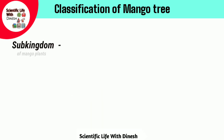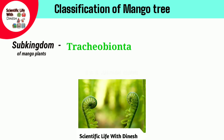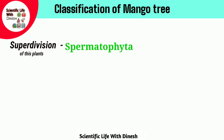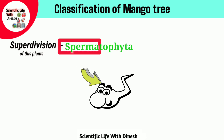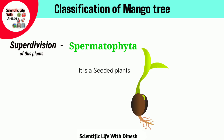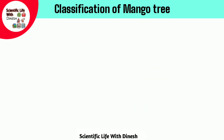Sub-kingdom of this plant is Tracheobionta, meaning it is a vascular plant. Super division of this plant is Spermatophyta. You know that what is sperm — sperm is a seed — meaning Spermatophyta, it is a seeded plant.